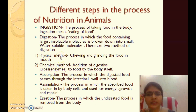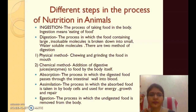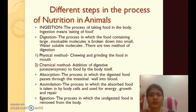Now we learn about the different steps in the process of nutrition in animals. In animals, there are five main steps: first is ingestion, second is digestion, third is absorption, fourth is assimilation, and fifth is egestion.